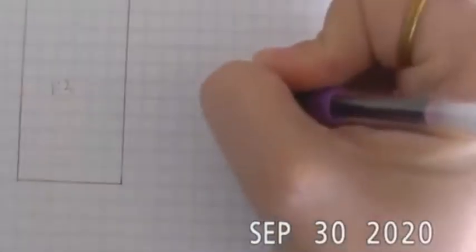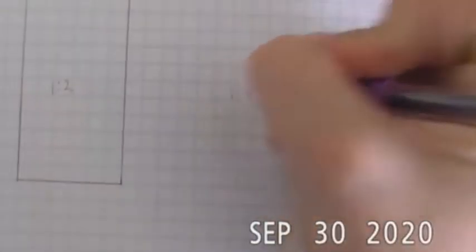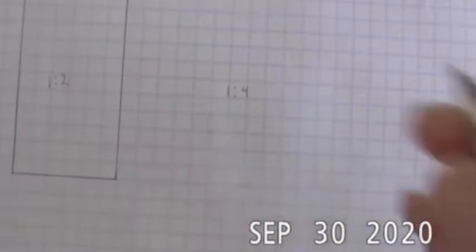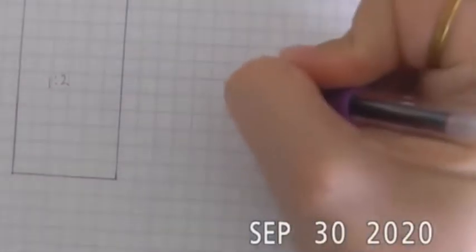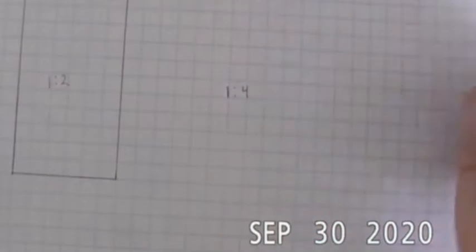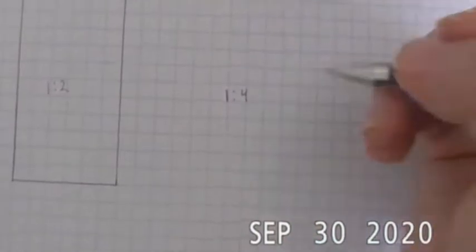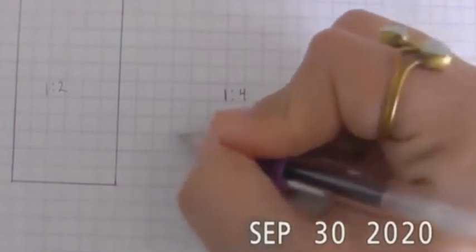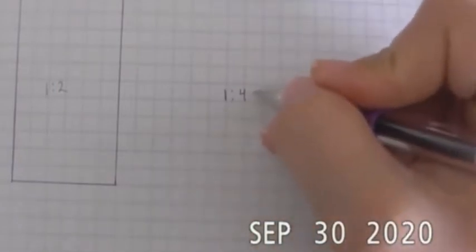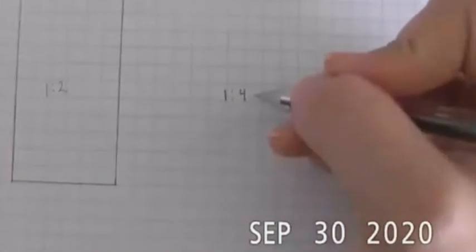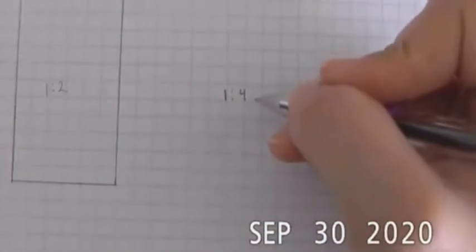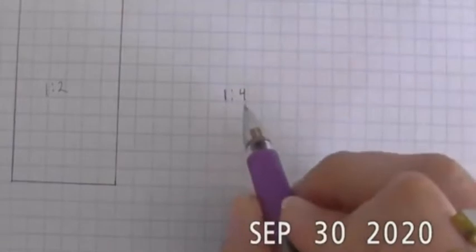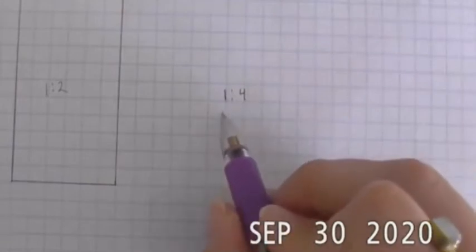Now another common reduced scale that we'll see is going to be one to four. Again, it could mean different units and especially if you're thinking about floor plans and architectural drawings. This could mean that one inch on our paper represents four feet in real life. So if we were drawing a building that was 20 feet, it would be represented by five inches.